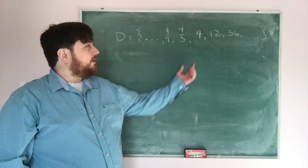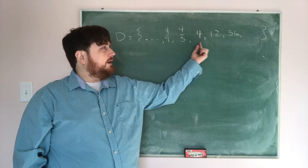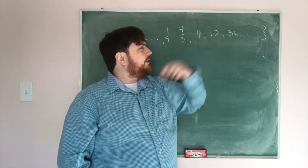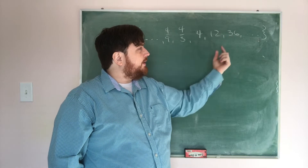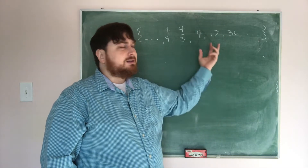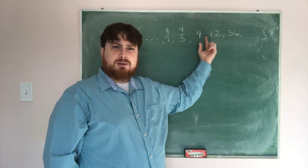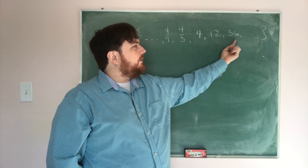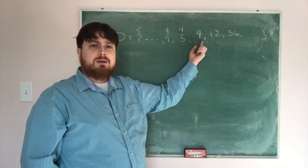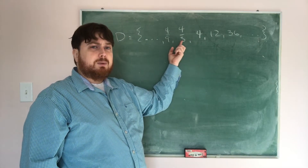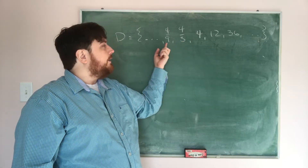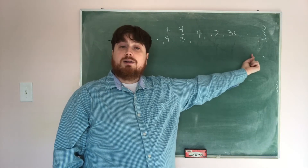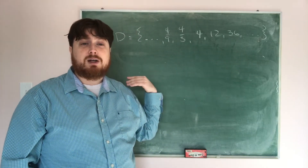Starting with 4, notice that going from 4 to 12 I can get there by adding 8 or multiplying by 3. To get from 12 to 36, I can multiply by 3 or add 24. Since the addition doesn't stay consistent but the multiplication does, I'll multiply by 3 each time going right, and divide by 3 going left. That pattern holds: 4 divided by 3 gives 4/3, and divided by 3 again gives 4/9.